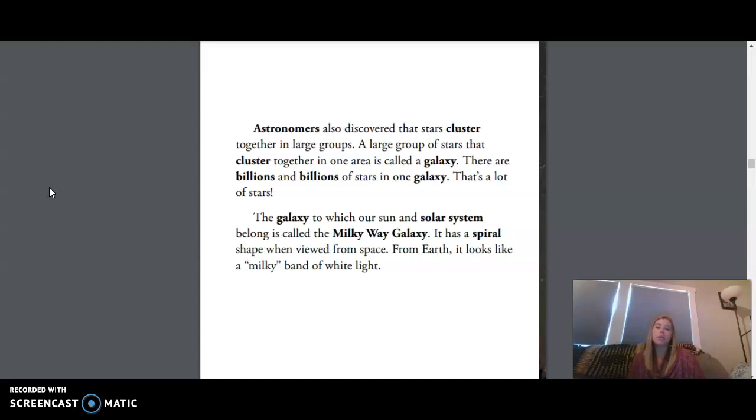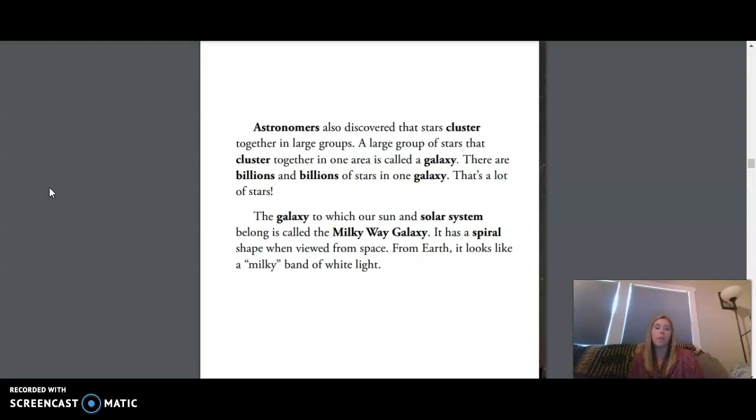The galaxy to which our sun and solar system belong is called the Milky Way galaxy. It has a spiral shape when viewed from space. From Earth, it looks like a milky band of white light.